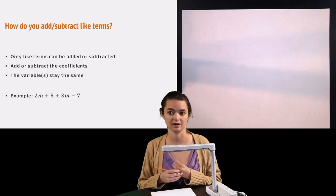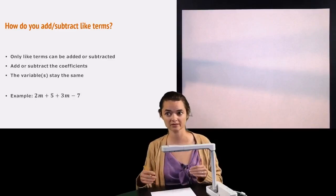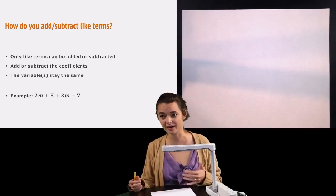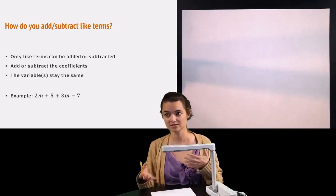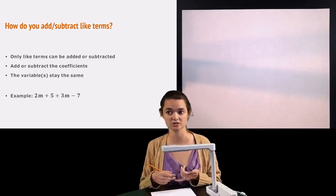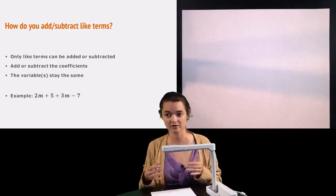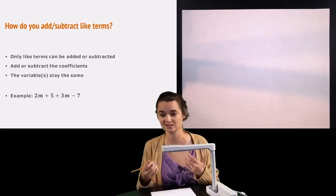So how do you actually add or subtract the like terms? So first off, only like terms can be added or subtracted. You have to have like things to add or subtract. Once you have those like terms, you just add or subtract the coefficients. Remember, those are the big numbers out front. And then the variable or variables, if you have more than one, they stay the same.